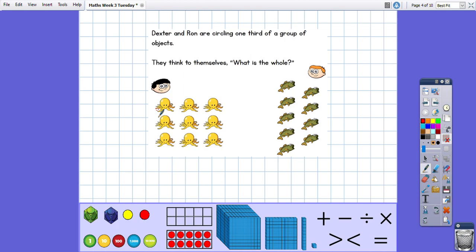So we've got one, two, three, four, five, six, seven, eight, nine. So the whole for Dexter is nine.